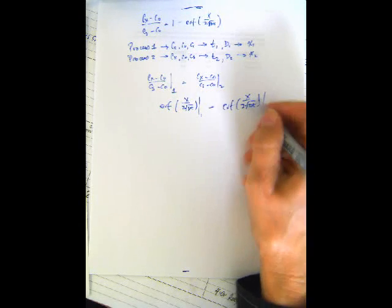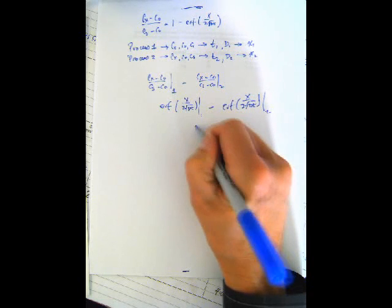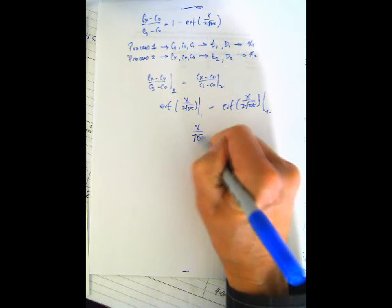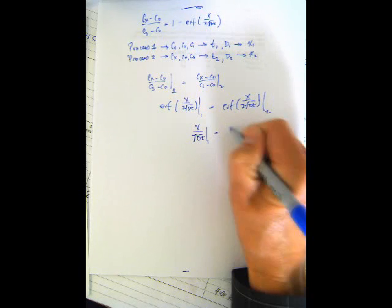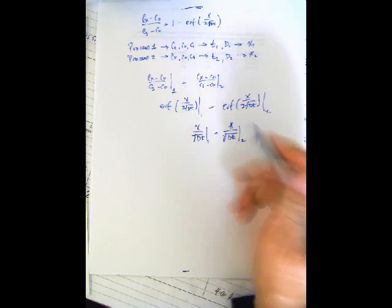Well, obviously, erf functions on both sides, get rid of that, get rid of that, multiply both sides by 2. And then we don't really like to have a radical in these kinds of relationships. And so what we'll do is square both sides,